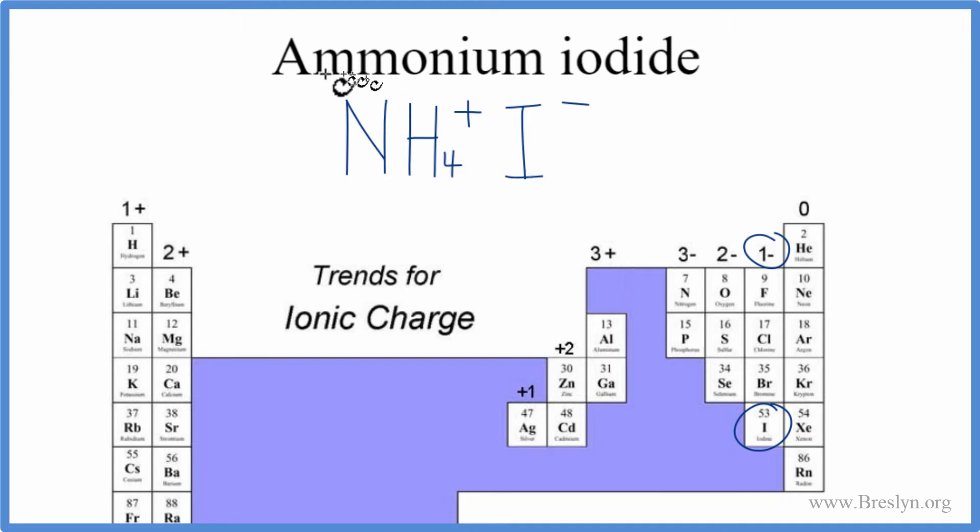So NH4I, that's the formula for ammonium iodide. Let's remove the charges, clean it up a bit, and there you have it, the formula for ammonium iodide.